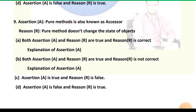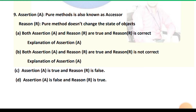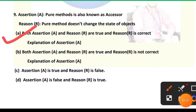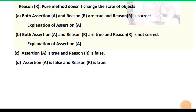Question 9 — Assertion: A pure method is also known as an accessor. Reason: A pure method doesn't change the state of an object. Both are true — pure methods are known as accessors, and they truly don't change the state of an object, which is why they are called pure. So option A is correct: both assertion and reason are true and the reason is the correct explanation.